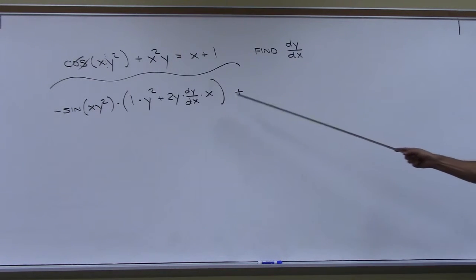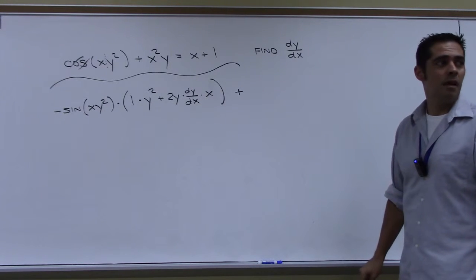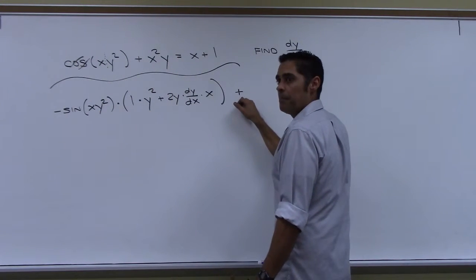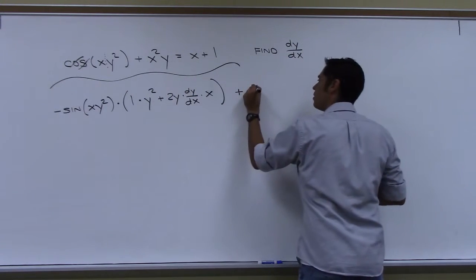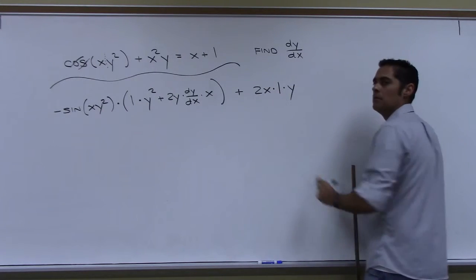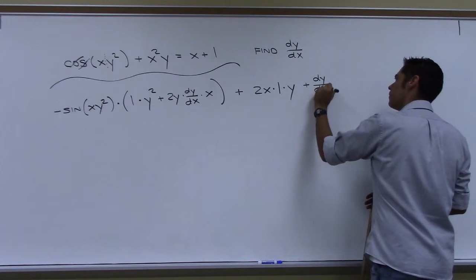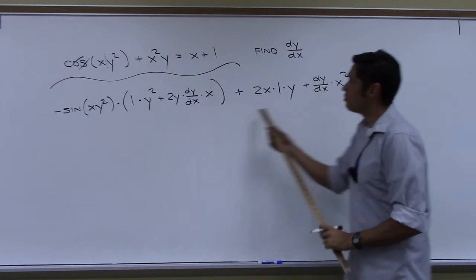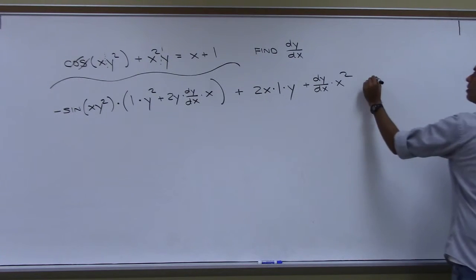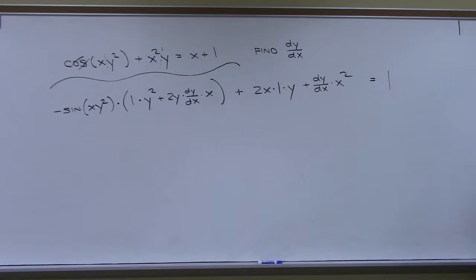Is it x squared at the last one? No, because that x comes from the product rule on x squared y — I haven't even started that piece yet. So for that term: 2x times 1 times y — that's 2xy — plus dy/dx times x squared. That's the product rule on x squared y. On the right side, the derivative of x is 1 and the derivative of 1 is zero.